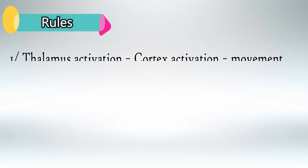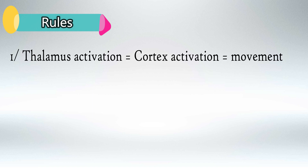Rule number 1: if the thalamus is active, it will activate the cortex, and this will result in movement.